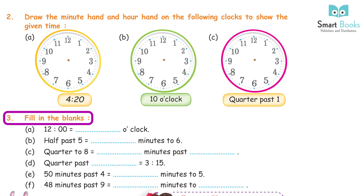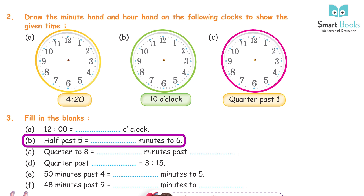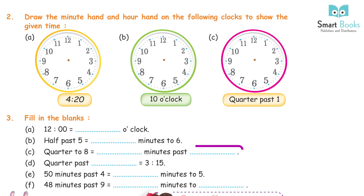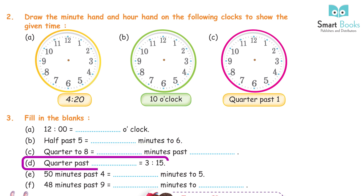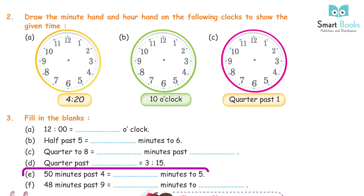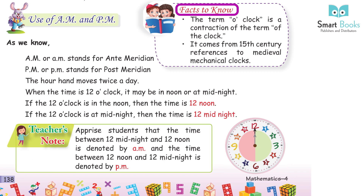Question 3: Fill in the blanks. A: 12:00 equals 12 o'clock. B: Half past 5 — 30 minutes to 6. C: Quarter to 8 — 45 minutes past 7. D: Quarter past 3 — 3:15. E: 50 minutes past 4 — 10 minutes to 5. F: 48 minutes past 9 — 12 minutes to 10. Facts to know: The term 'o'clock' is a contraction of 'of the clock', coming from 15th century references to medieval mechanical clocks.